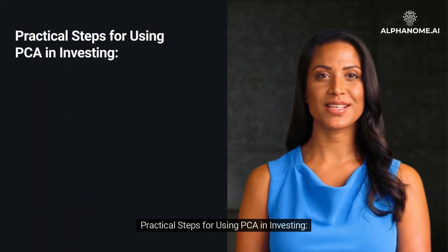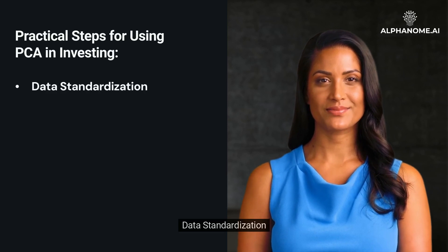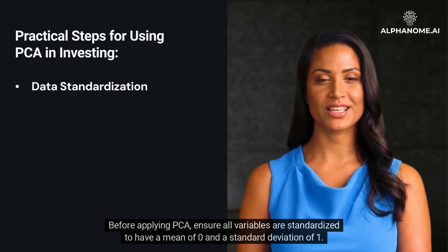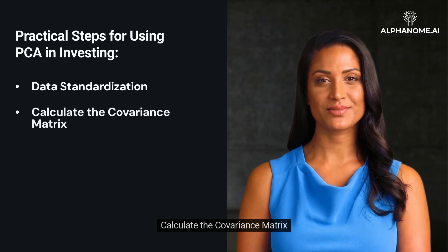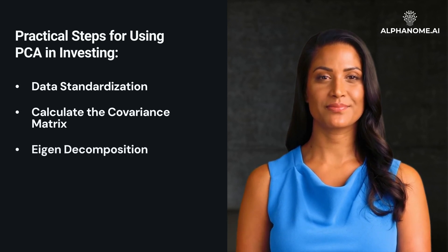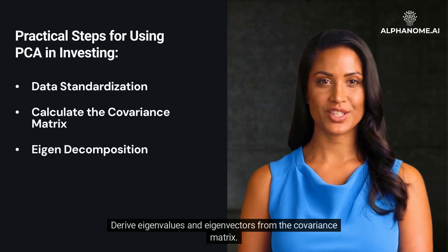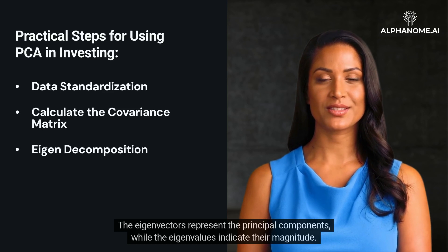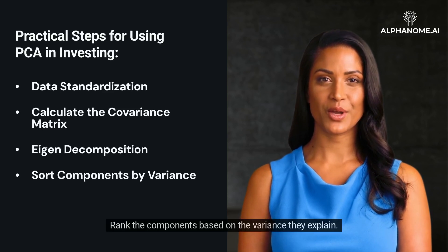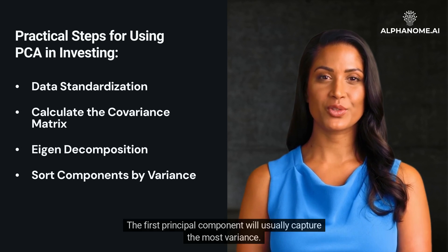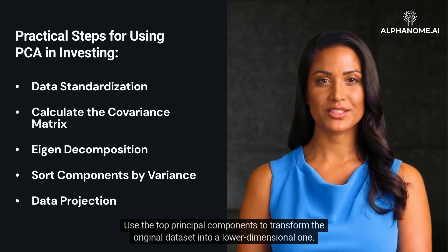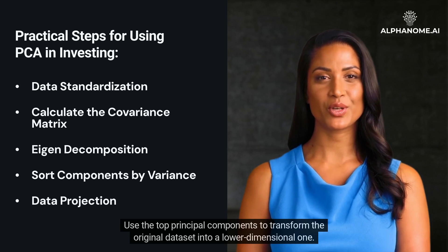Practical steps for using PCA in investing: Data standardization — before applying PCA, ensure all variables are standardized to have a mean of zero and a standard deviation of one. Calculate the covariance matrix to capture the relationships between variables. Eigendecomposition — derive eigenvalues and eigenvectors from the covariance matrix. The eigenvectors represent the principal components, while the eigenvalues indicate their magnitude. Sort components by variance, ranking them based on the variance they explain — the first principal component will usually capture the most variance. Finally, data projection: use the top principal components to transform the original dataset into a lower-dimensional one.